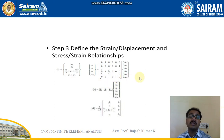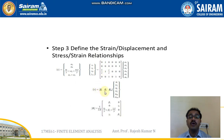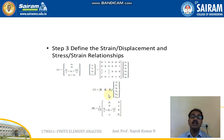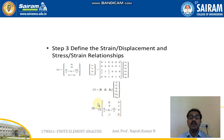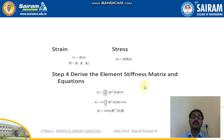In the end we will be getting a 6×6 matrix. These particular terms, even we can write in short form as Bi, Bj, and Bm with displacements ui, wi, uj, wj, um, wm. In extended form we will get the full matrix. Strain is always the B matrix into the D matrix — that is the displacement matrix. And stress is the D matrix into B matrix into D matrix.